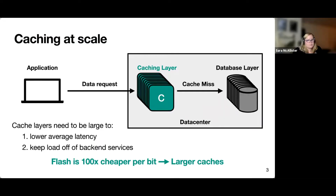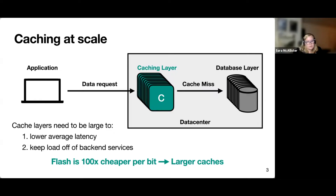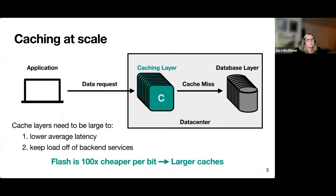That's where caching comes in. If an application wants these objects, it's going to send a request which first hits a caching layer. If the caching layer has a miss, it'll go to the database layer. The caching layer's main purpose is to lower the average latency of objects overall, and more importantly, to keep load off backend services. To do this most effectively, we want a large caching layer, and to get a large caching layer without paying too much, a lot of companies employ flash because it's 100 times cheaper per bit than DRAM.